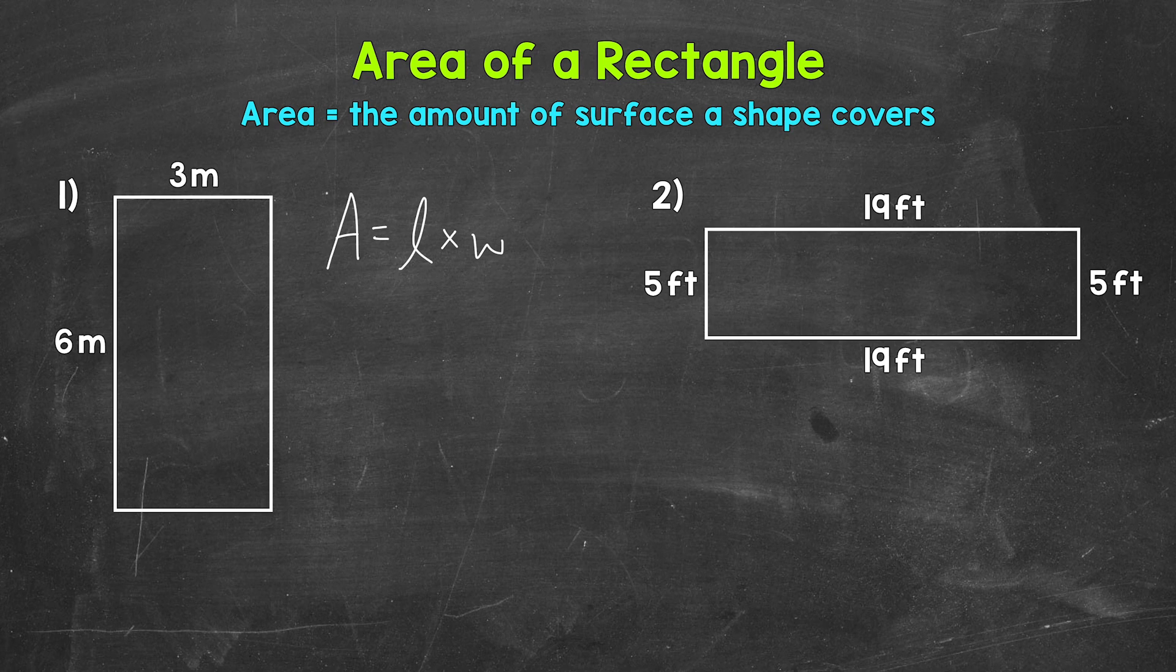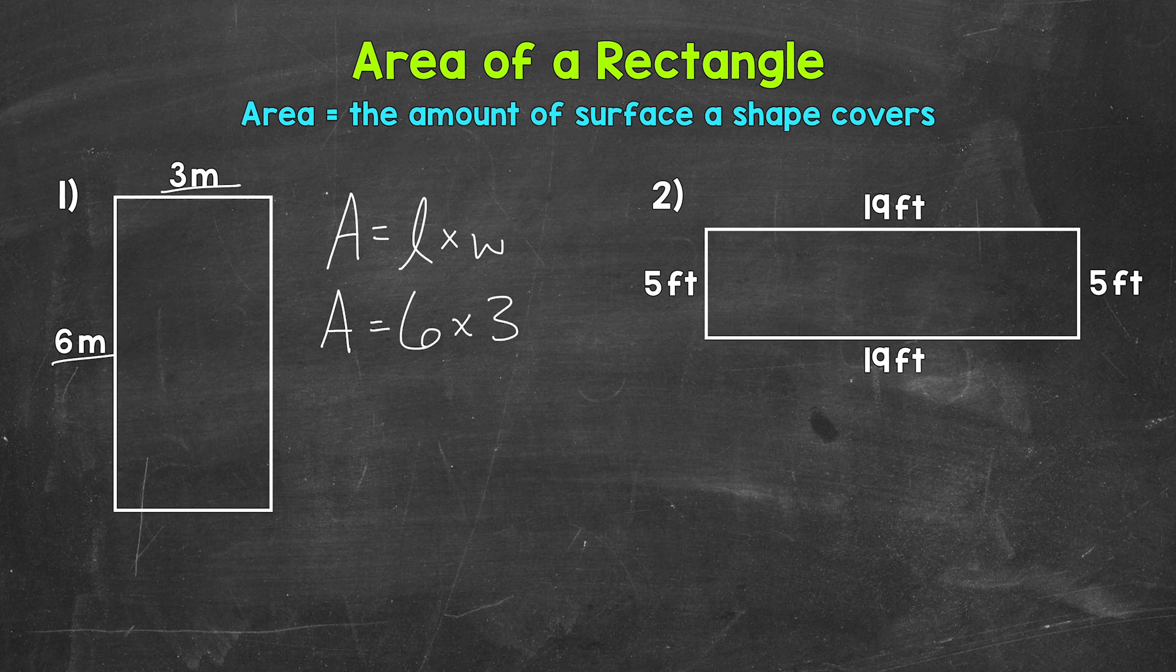Now all we need to do is plug in the length and width and then multiply. I'm going to use the longer side for the length, so 6 meters, and then 3 meters for the width. So area equals 6 meters times 3 meters.